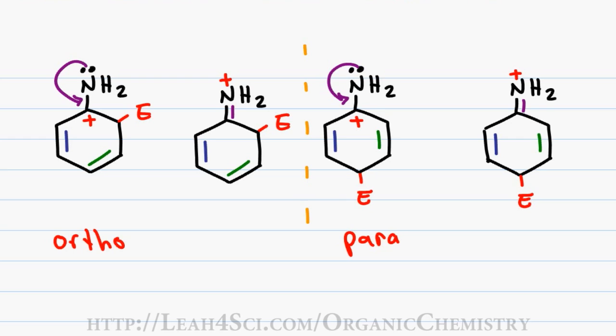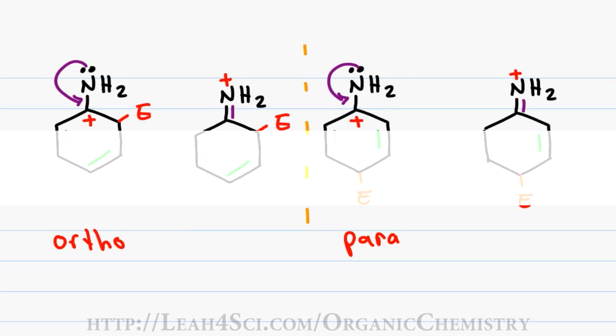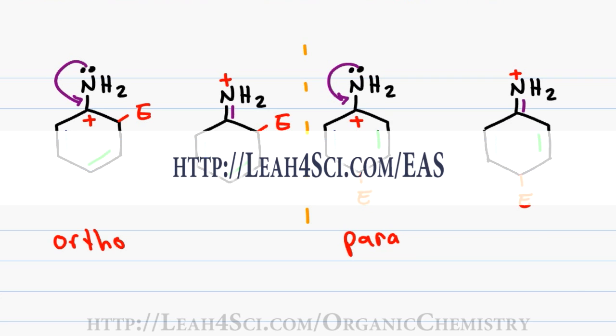This is just one example — I've worked through many more substituted EAS examples in my membership site at studyhall.leah4sci.com. Be sure to join me in the next video where I take you through deactivating meta-directors followed by the halogen exception, available at leah4sci.com/EAS.